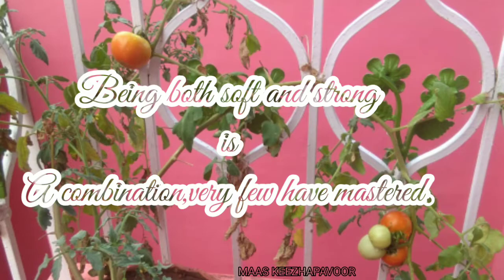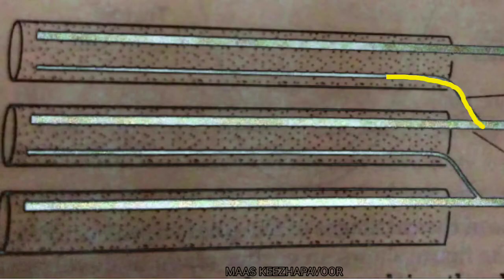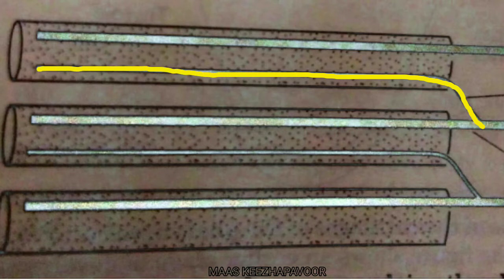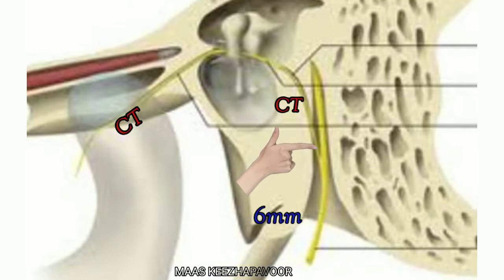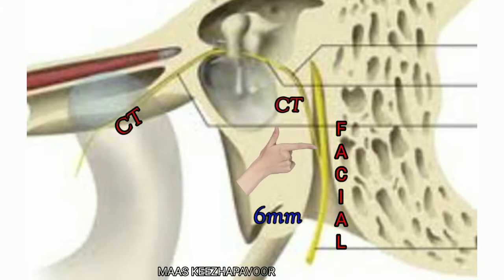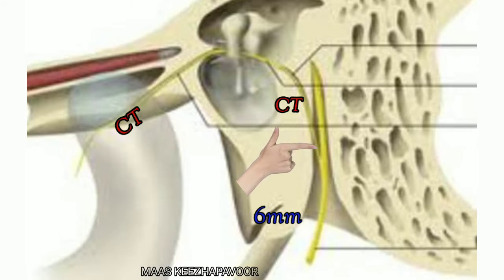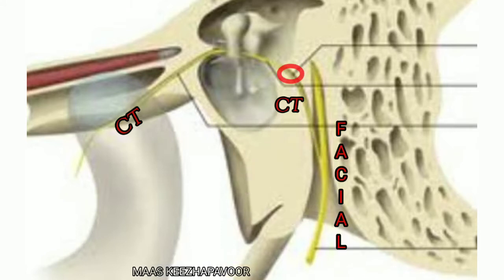The chorda tympani nerve is the pre-ganglionic branch of the first pharyngeal arch. It arises from the facial nerve 6 mm above the stylomastoid foramen, while the facial nerve descends in the vertical part of the facial canal. The nerve then enters into the posterior canaliculus in the posterior wall of the middle ear cavity.